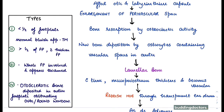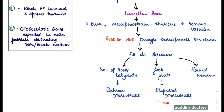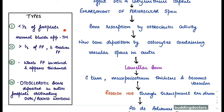There are four types of stapedial otosclerosis. Type one involves half of the footplate with a normal bluish appearance of the tympanic membrane. Type two involves more than half of the footplate with thickening. Type three involves almost the whole footplate and it appears thickened. Type four has otosclerotic bone deposited in the entire footplate, obliterating the oval and round window. Also, the fissura ante fenestram, situated in front of the oval window, is the most common site of origin.